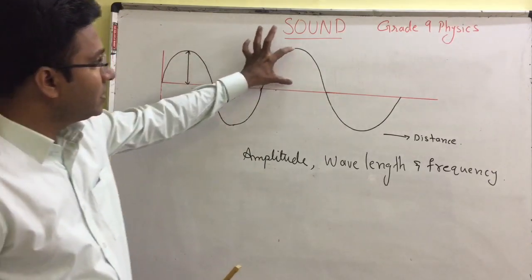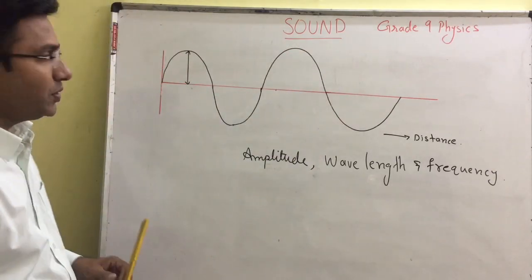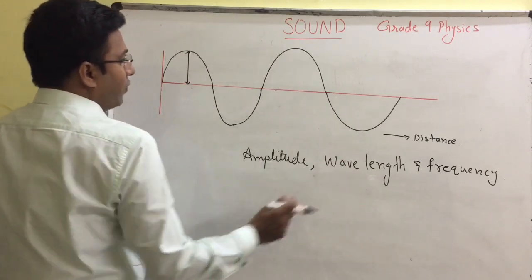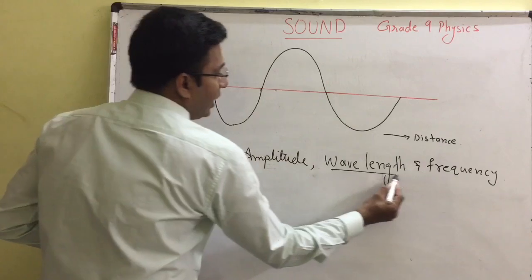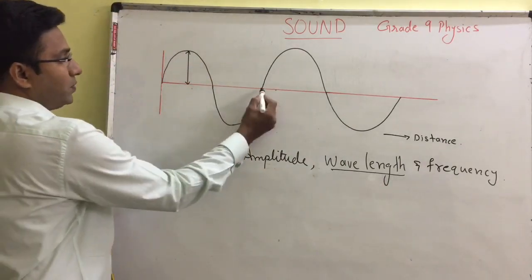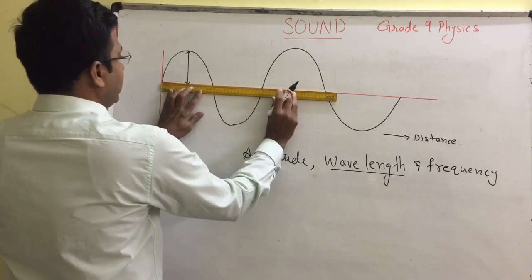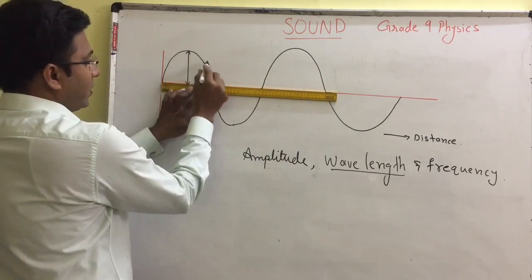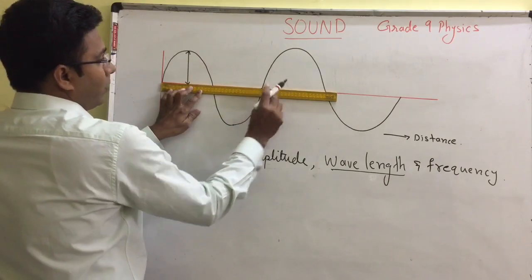This is also amplitude, and this is also amplitude. Now let us check for wavelength — the length of one complete wave. From here to here, if you place a ruler and check where the wave starts and where it ends, that is one wavelength.